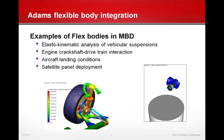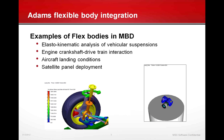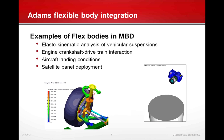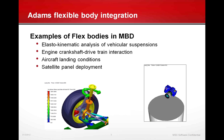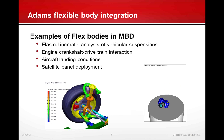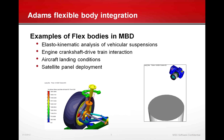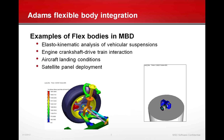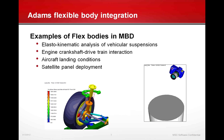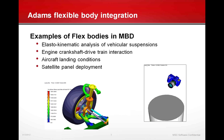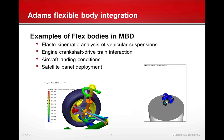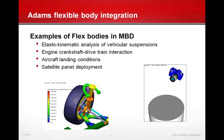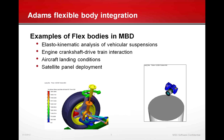Some examples of flexible bodies include lasto-kinematic analysis of suspensions or the lower control arm — examining stresses due to turning, going over road surfaces, hitting potholes, or obstacles in the road while the wheel is turning. If you've ever dropped an electronic device and wondered whether it will survive, we can analyze that with flexible bodies in a multi-body dynamic analysis with Adams. We can also do aircraft landing conditions, coming down on the tarmac, panel deployment, satellites, and more.